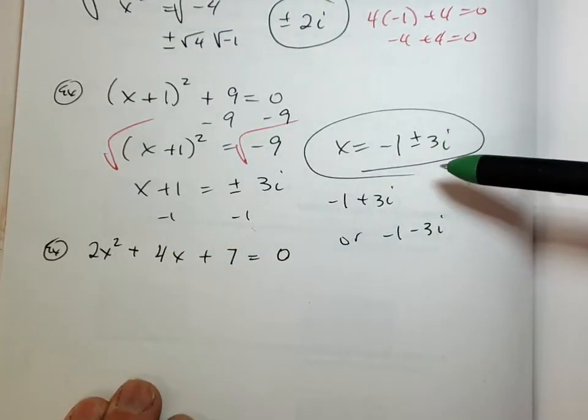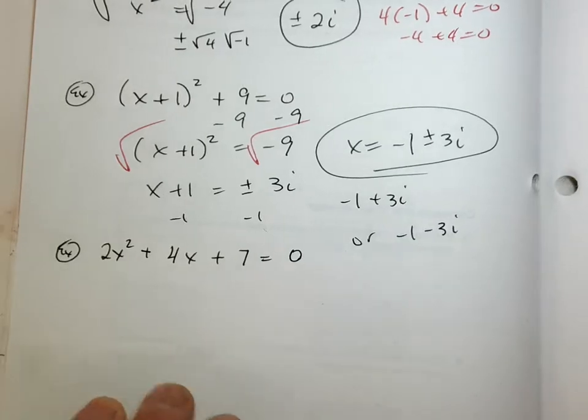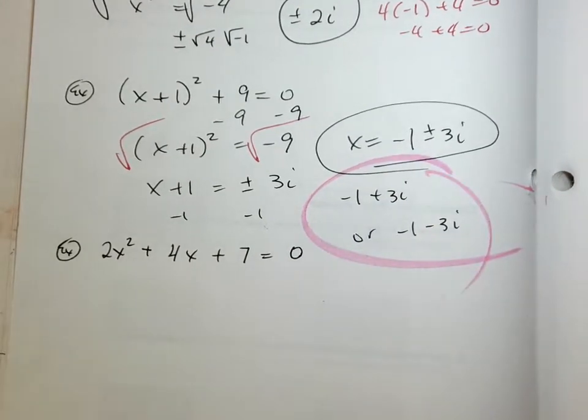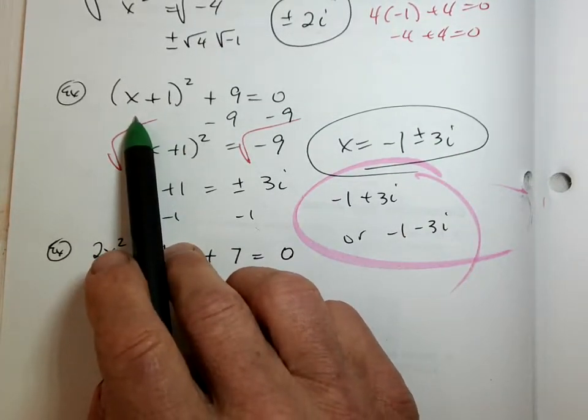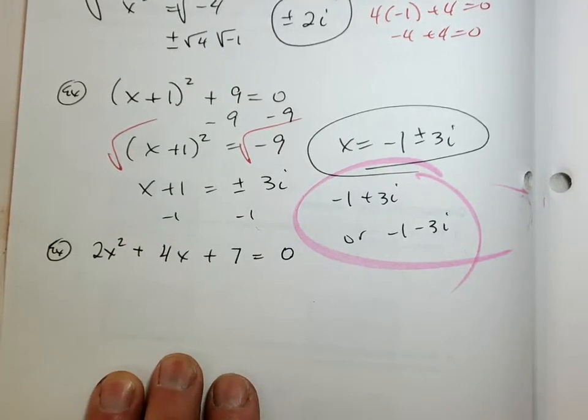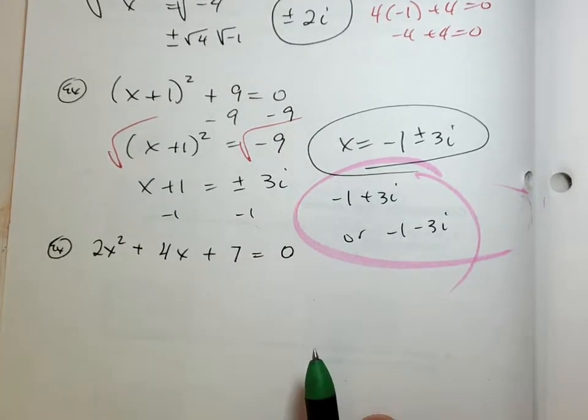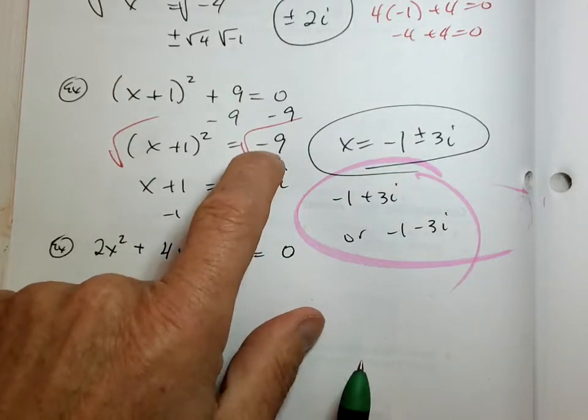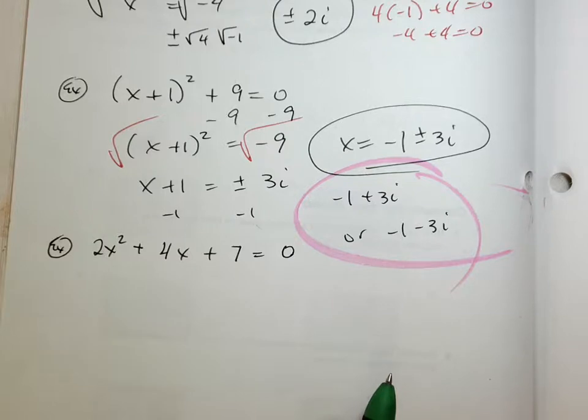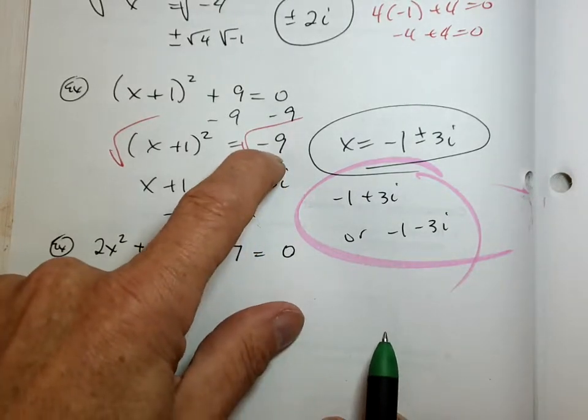Now this is a real number. This is an imaginary number. You cannot add real numbers with imaginary. So what do you do? Do not make this 4, do not make this 2. You keep it as negative 1 plus or minus 3i, which is two answers: negative 1 plus 3i or negative 1 minus 3i. For me it's faster just to write the plus or minus. But it really means negative 1 plus 3i and it also means negative 1 minus 3i. Now if we were to take and plug these into the original, we would get a value of 0. We really will. I'm not going to check that one.